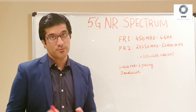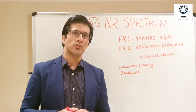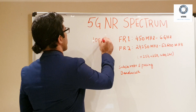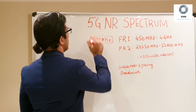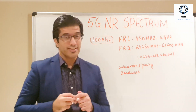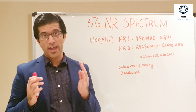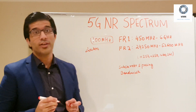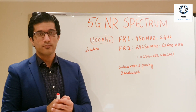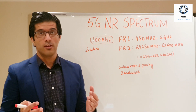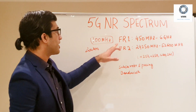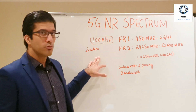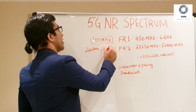In terms of bandwidth, you can allocate up to 100 MHz of carrier bandwidth in FR1. For FR2, you can allocate 200 MHz or even 400 MHz. For comparison, in LTE the maximum bandwidth per carrier is 20 MHz, so 5G significantly expands the available bandwidth per carrier.